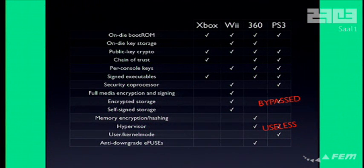Let's go back to our overview of the security features. The hypervisor is basically useless because it doesn't prevent you from copying games. It's not preventing you from running your own code either because you can just use an exploit. And the signed executables are also pretty useless because the hypervisor does not enforce that they need to be signed to be loaded into memory — you can just ask it for executable pages and it does that.